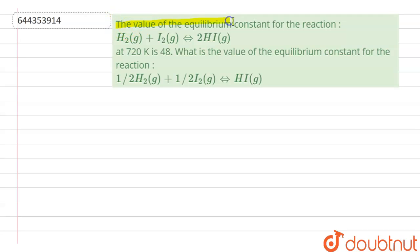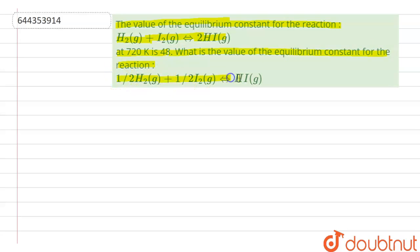The question given here is: the value of the equilibrium constant for the reaction H₂ + I₂ → 2HI at 720 Kelvin is 48. What is the value of the equilibrium constant for the reaction ½H₂ + ½I₂ → HI?